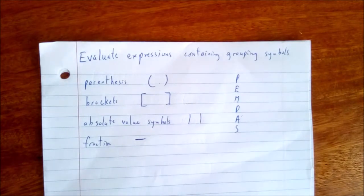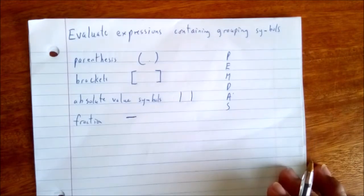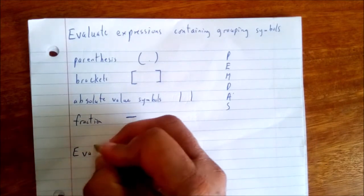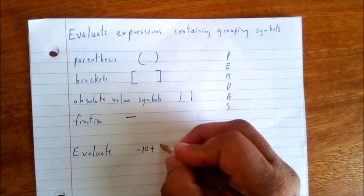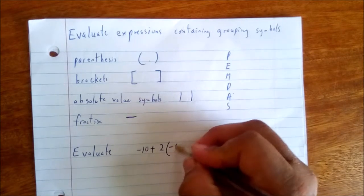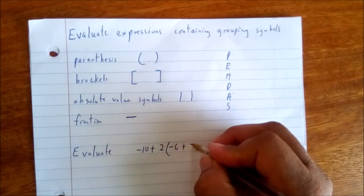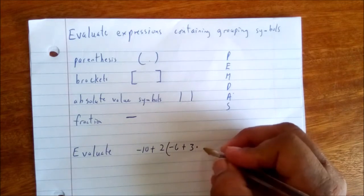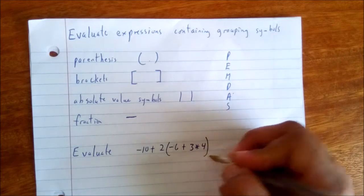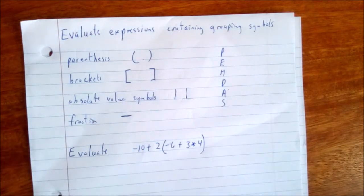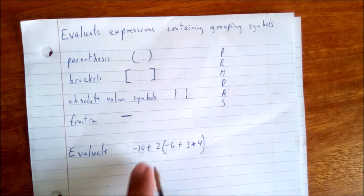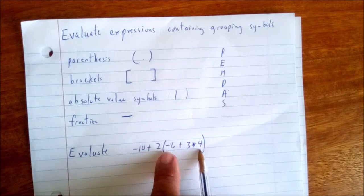Let's start with some examples. Evaluate: negative 10 plus 2, open bracket, negative 6 plus 3 times 4, close bracket. This is where we have our grouping symbol. We begin first by evaluating the expression inside the bracket.